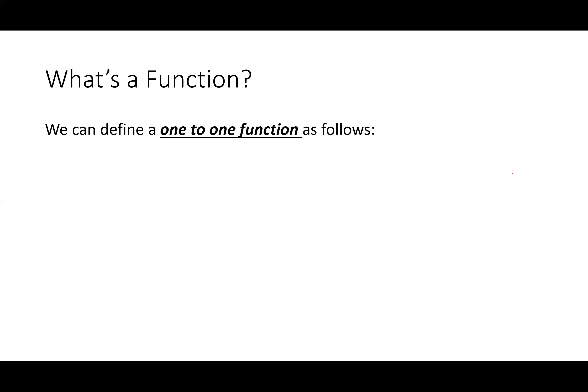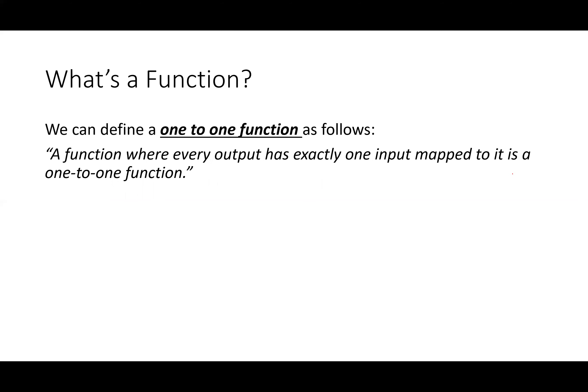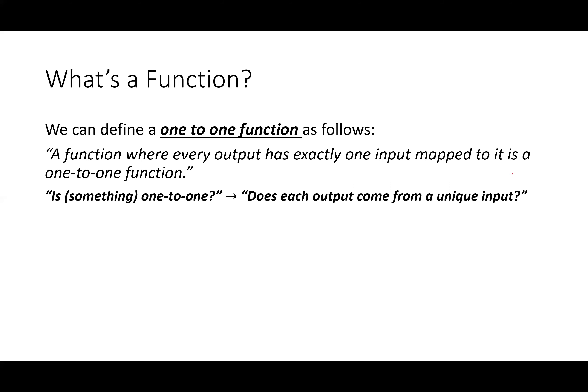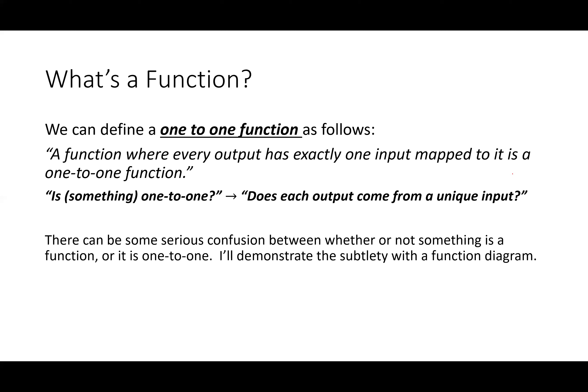A one-to-one function is where every output has exactly one input mapped to it. So this is where we're focusing on our dependent values, our y-axis, and we want to know whether or not it's got one matching input value. When asking 'is something one-to-one?' what we should be asking is: does each output come from a unique input? There can be some serious confusion between these, but we're going to talk about these subtleties with a function diagram.